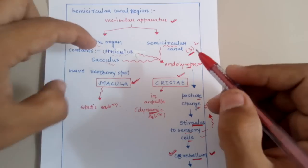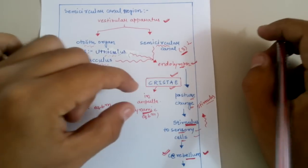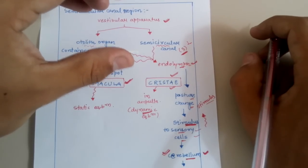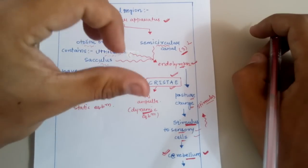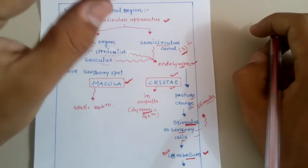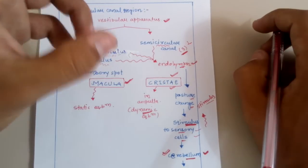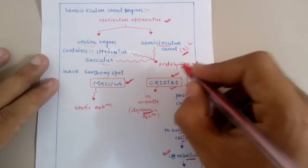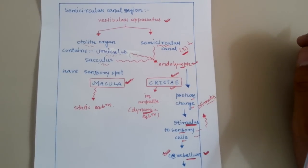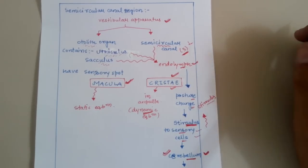The otolith organ, which has sensory spots called macula, is responsible for maintaining static equilibrium — that is, equilibrium when we are not moving. The cristae, which are present in the ampulla region of the semicircular canal — ampulla being the dilated portion of the semicircular canal — help maintain dynamic equilibrium. Dynamic equilibrium refers to equilibrium when we are in motion, such as when walking or rotating our head. That rotation signals the cristae in the semicircular canals. So the semicircular canal maintains dynamic equilibrium via the cristae, and the otolith organ (utriculus and sacculus) maintains static equilibrium via the macula.